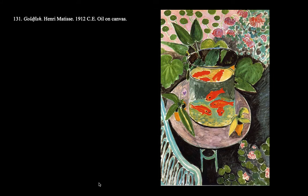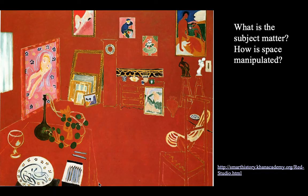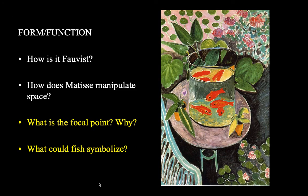The next image we have is in the 250, and this one is called Goldfish. The discussion questions tomorrow are going to be based on this artwork. The four questions are: How is it Fauvist? How does it manipulate space? What's the focal point and why? And what could the fish symbolize? You might go back and look at what we talked about and how he's manipulating space. Feel free to look at the videos on Canvas or on Smart History in order to figure out your discussion questions.